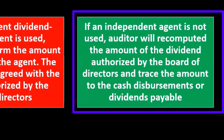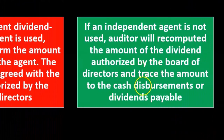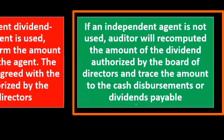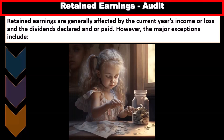If an independent agent is not used — more likely with a non-publicly traded company — the auditor will recompute the amount of the dividend authorized by the board of directors. The auditor then traces the amount authorized by the board to the cash disbursements or dividends payable to confirm what actually happened.